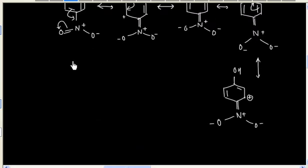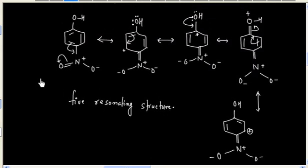So you see in this case we have 5 resonating structures. So NO2 acts as an electron withdrawing group.